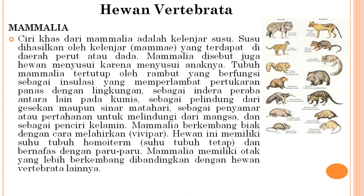Mamalia: ciri khasnya adalah kelenjar susu, sehingga disebut hewan menyusui karena menyusui anaknya. Tubuh mamalia tertutup oleh rambut yang berfungsi sebagai insulasi, indera peraba (pada kumis), pelindung dari gesekan dan sinar matahari, penyamar atau pertahanan dari mangsa, dan penciri kelamin. Mamalia berkembang biak dengan cara melahirkan (vivipar), memiliki suhu tubuh homoiterm (tetap), bernapas dengan paru-paru, dan memiliki otak yang lebih berkembang dibandingkan vertebrata lainnya.